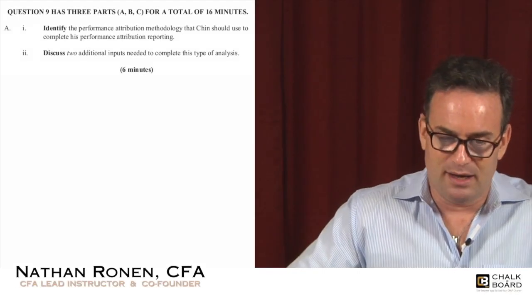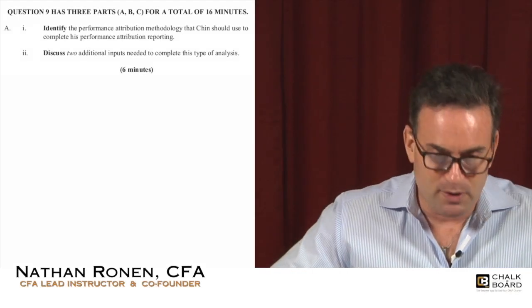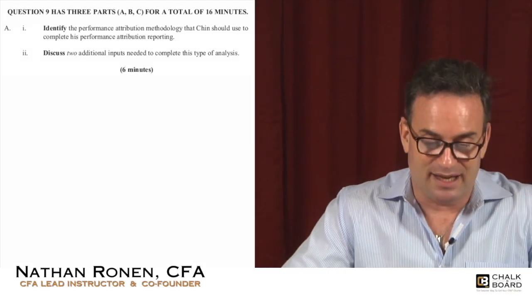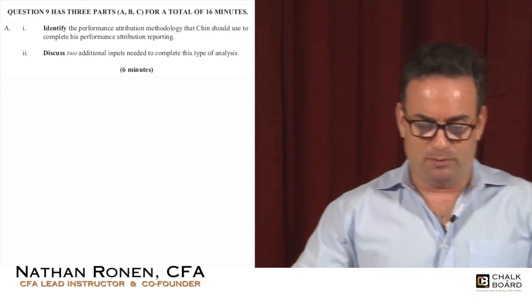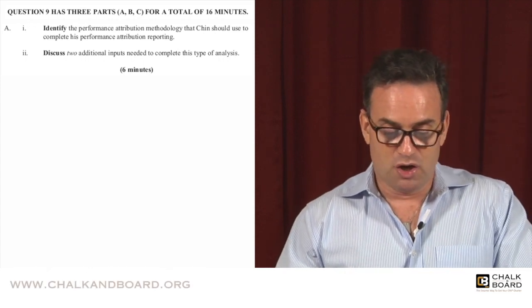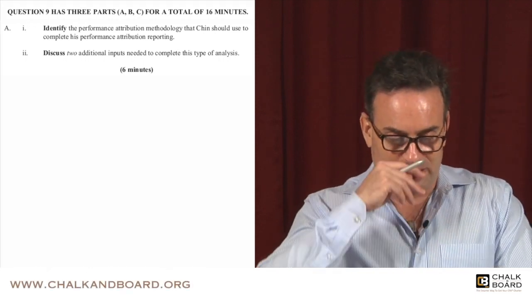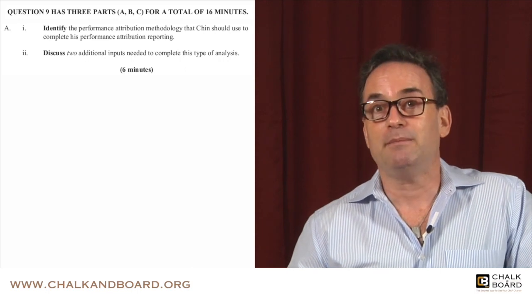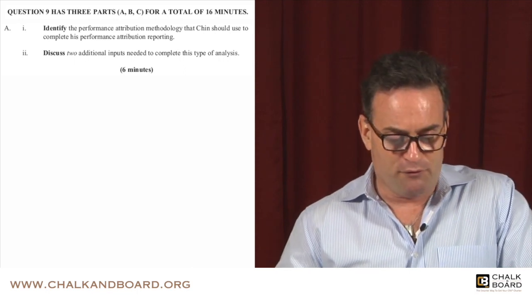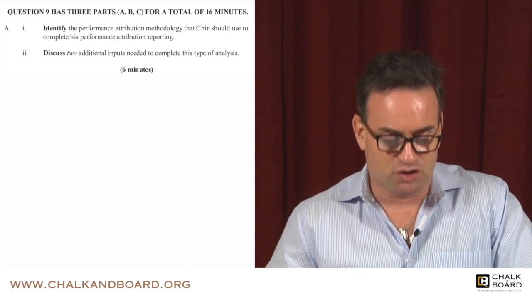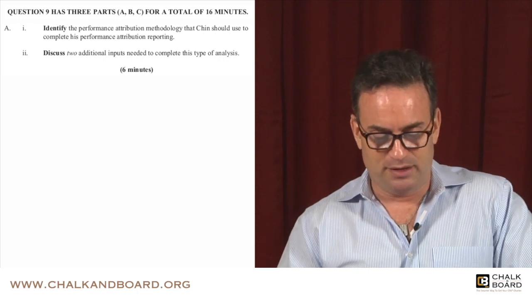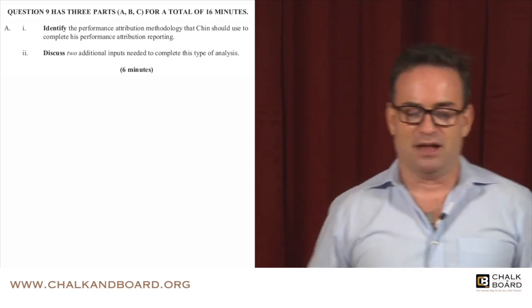Let's take a look at A1 and A2. A1 and A2 says: identify the performance attribution methodology that Chin should use to complete his performance attribution reporting. And number two for A is: discuss two additional inputs needed to complete this type of analysis.